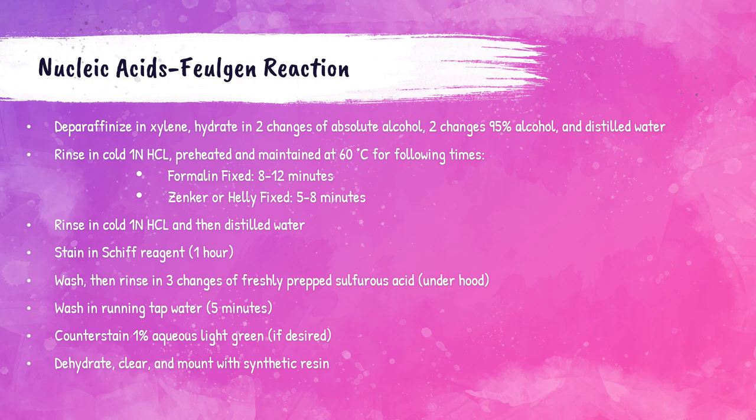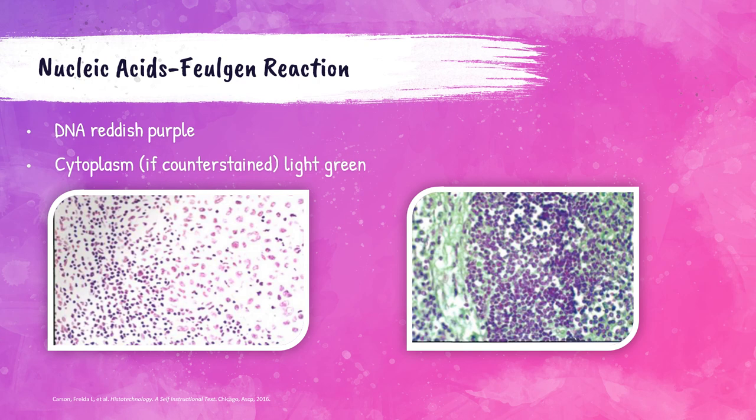If properly stained, the DNA should appear reddish-purple and the cytoplasm, if counterstained, should be light green. The photos shown here demonstrate lymph node sections stained using the Feulgen reaction — the DNA is a bright rose-red. The right photo shows the same stain counterstained with light green, displaying the cytoplasm in light green. These two photos also show possible issues: on the left, under- or over-hydrolysis causes the aldehydes not to be demonstrated with the Schiff reagent; on the right, too much counterstain is applied and the section is cut too thickly.